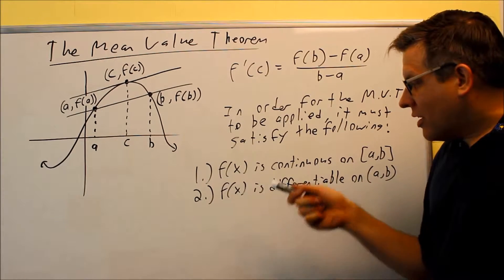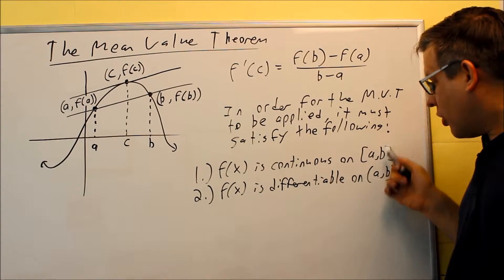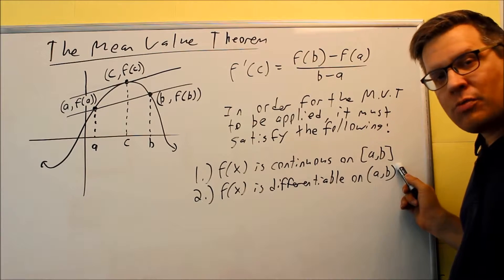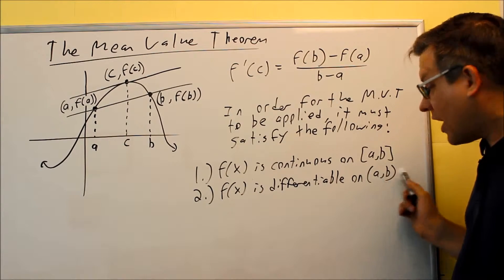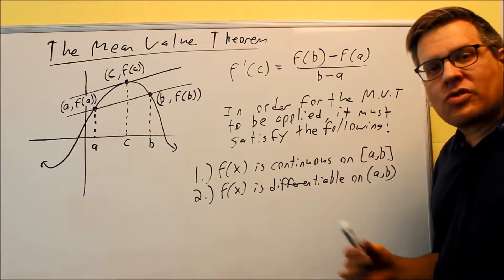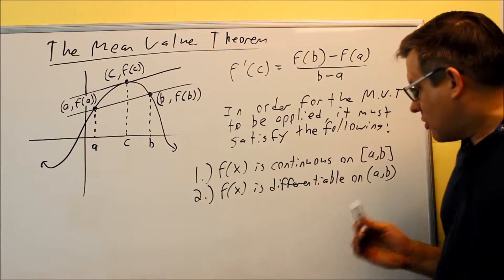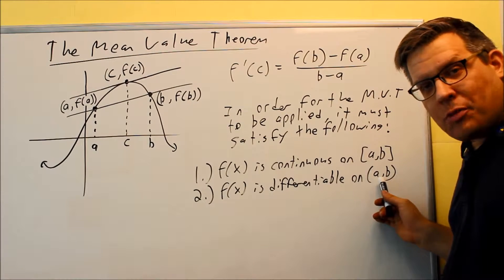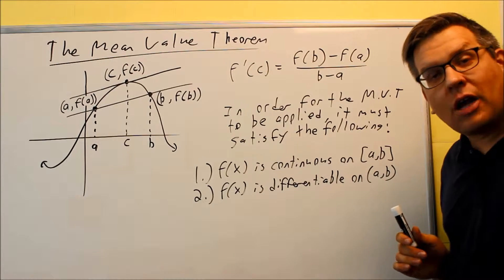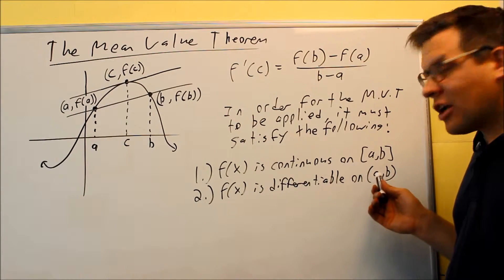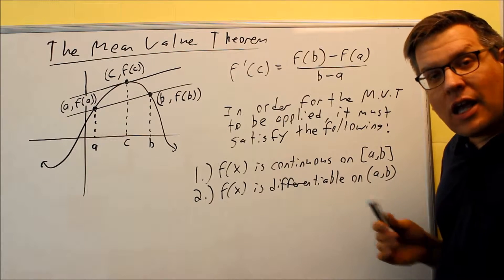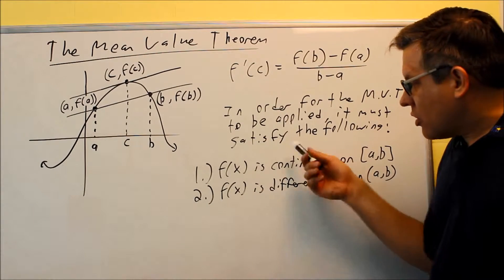The second one, f(x) is differentiable on, now notice, continuity is with a closed interval. Differentiability is the open interval, so not including the endpoints here. What this means is that we're going to take the derivative and we're going to see that the derivative is continuous on the open interval from A to B. So again, if it's not differentiable on A to B, it's okay because we're not including the endpoints there. We're only talking about it's continuous on every point in between A and B.